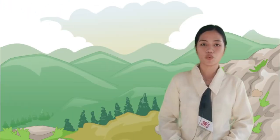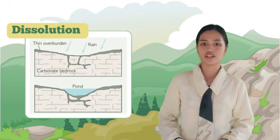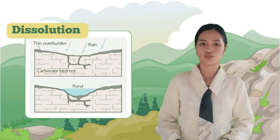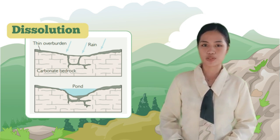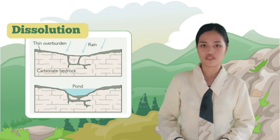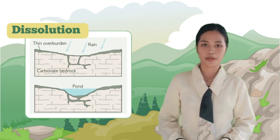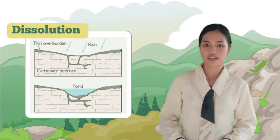Moving on, we have dissolution sinkholes. Dissolution sinkholes are formed through the gradual dissolution of soluble rocks, such as limestone, by acidic groundwater. Over time, the rock dissolves, creating underground channels and cavities. These sinkholes often appear as shallow depressions or bowl-shaped features on the surface.